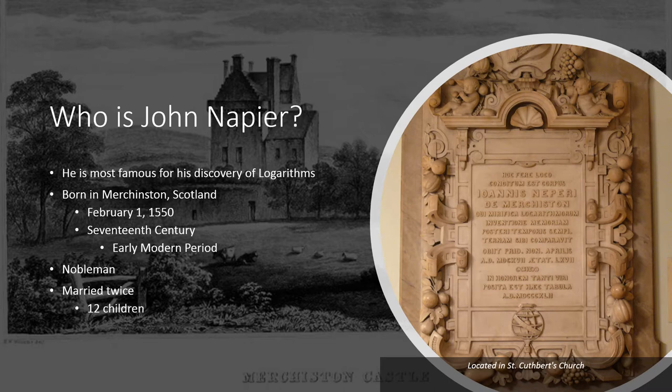He was married twice. His first wife, Elizabeth, unfortunately passed away, and soon thereafter he remarried. He had twelve children, two from his first marriage and ten with his second. And of those twelve children, he had six boys and six girls.